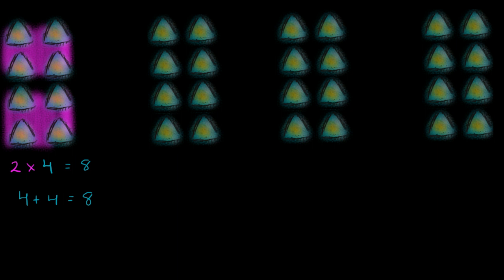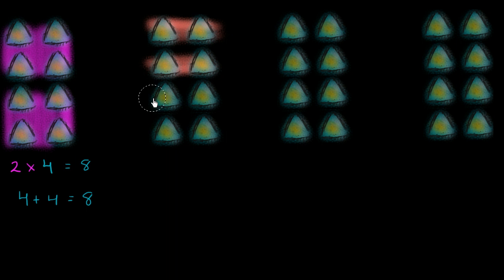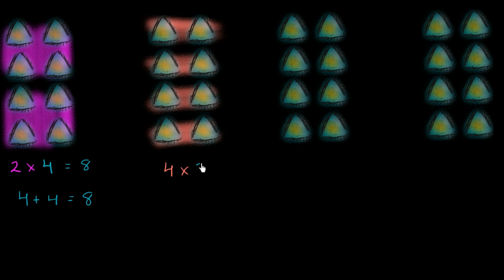So let's try it out ourselves. One thing we could do — instead of viewing this as two groups of four, we can view eight as four groups of two. So that's one group of two, two groups of two, three groups of two, four groups of two. So we could write that four times two is equal to eight.